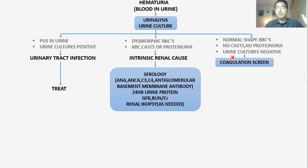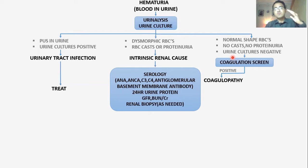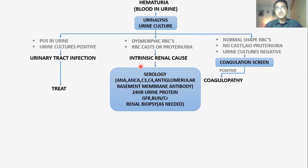When intrinsic renal cause and infection are excluded, you have to go for a coagulation screen to look for coagulopathies. If the coagulation screen is positive, you have to explore and treat all the causes of coagulopathy. If the coagulation screen is normal, it means there is nothing wrong with the coagulation system of the body.